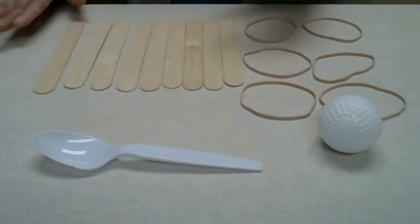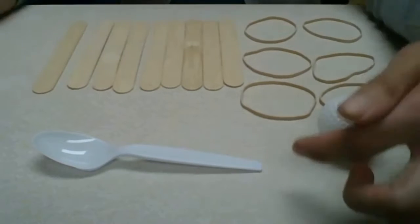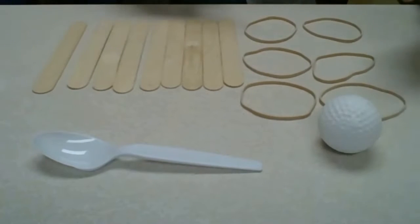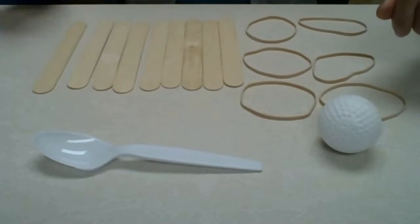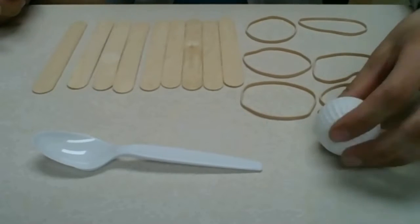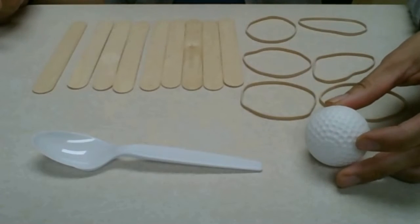So what we're going to need are nine popsicle sticks, a plastic spoon, six rubber bands and a soft object. I have a plastic golf ball, but you can try a pom-pom or a small ball.